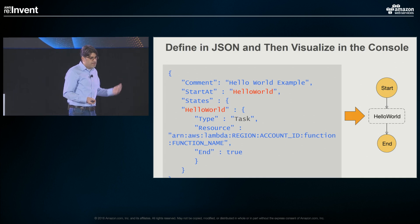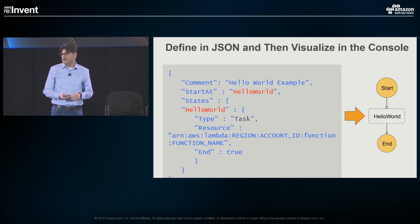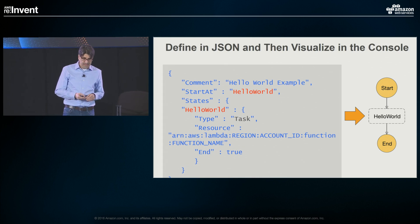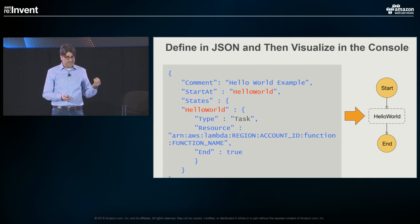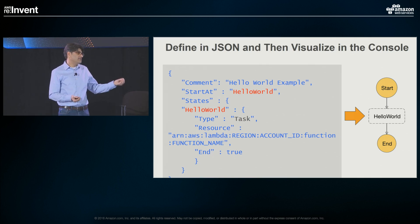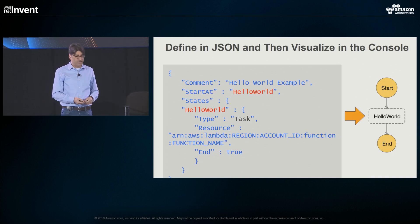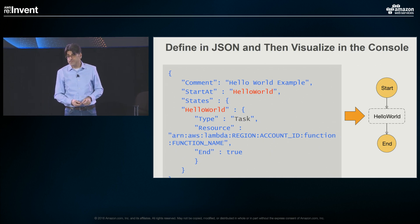Define your state machine in JSON and visualize it in the console. What you see on the left is the JSON code — almost human readable — which generates the classic hello world pattern you see on the right. We specify what state we start in, define the state, and say where we go next: either it's the last state — we call it the end — or we say what's the next state, name it, and go to it. That's how we build state machines.